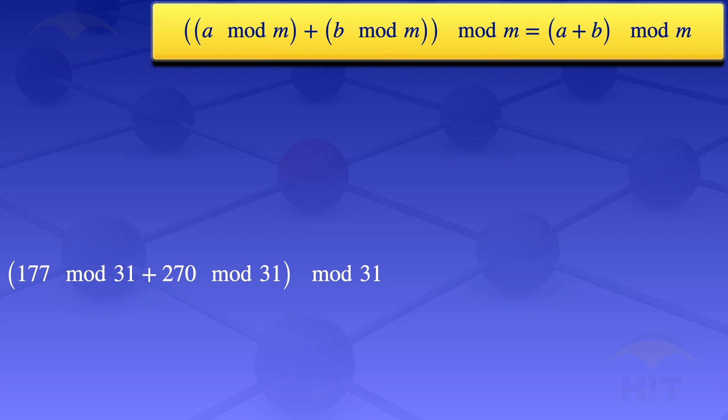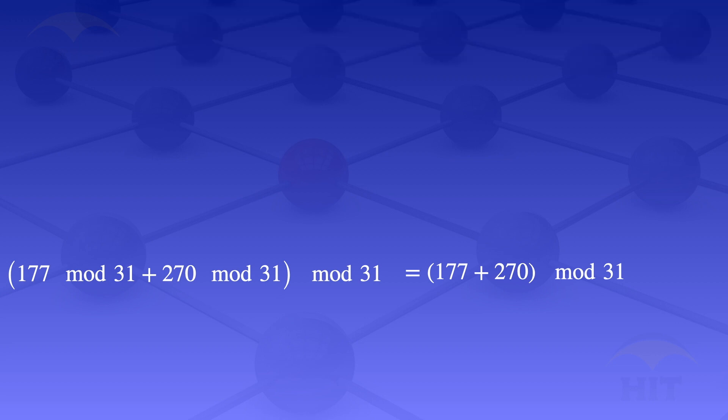In this case, we have mod 31, so we add the values a and b. Using that formula, we get (177 + 270) mod 31.